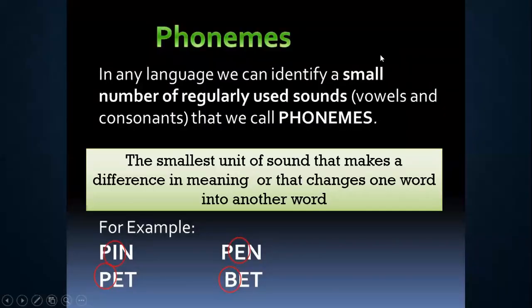Now let's talk about what is a phoneme. A phoneme is the smallest unit of sound that makes a difference in meaning, or that changes one word into another word — when we divide a string into small pieces which we call segments. For example, the word PIN has three segments: P, I, N. If we change the vowel and write E instead of I, the word changes and gives an entirely different meaning. Similarly, in the next example, the word is PET.